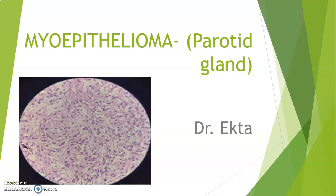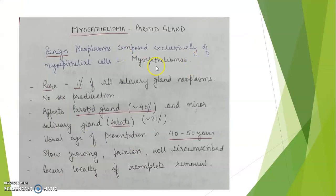Hello everyone. Today we are going to study a rare tumor: myoepithelioma of the parotid gland. Myoepitheliomas are benign neoplasms composed exclusively of myoepithelial cells. They are very rare, comprising 1% of all salivary gland neoplasms.